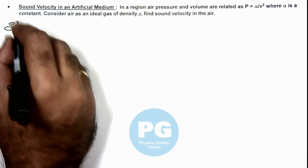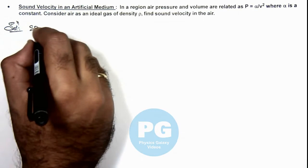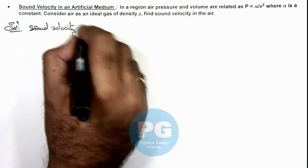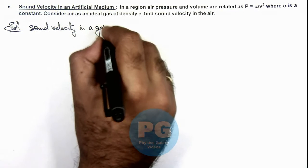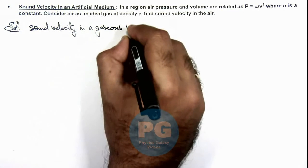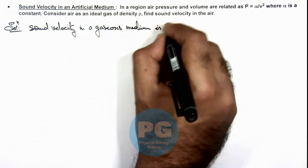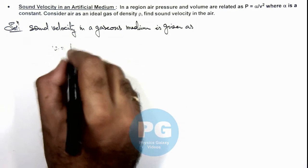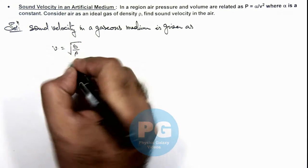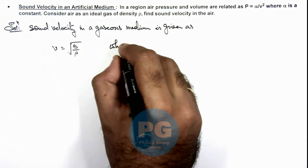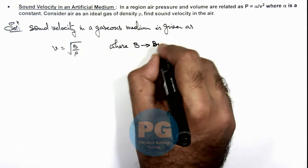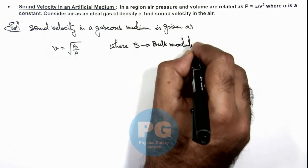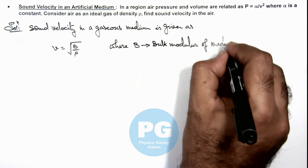So, here we know sound velocity in a gaseous medium is given as - we already know that sound velocity is given as root of bulk modulus by density, where B is the bulk modulus of medium.